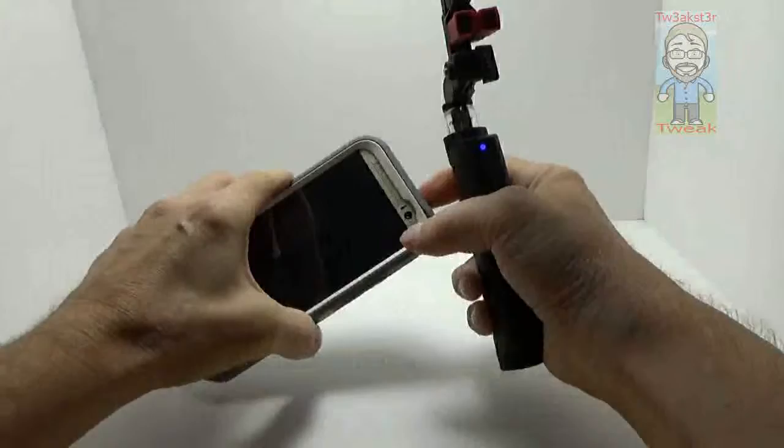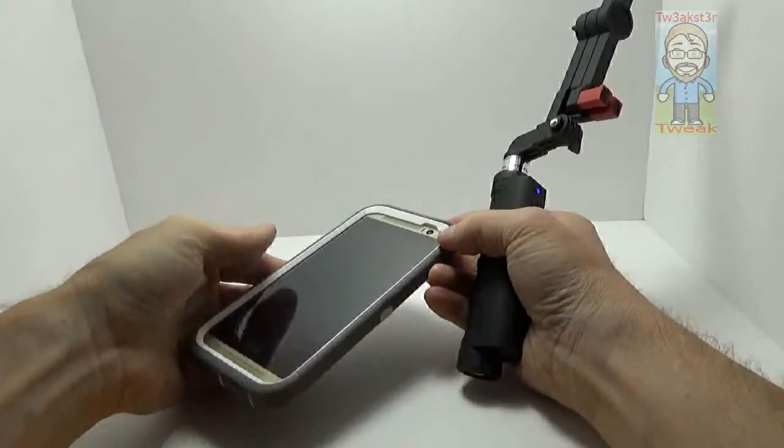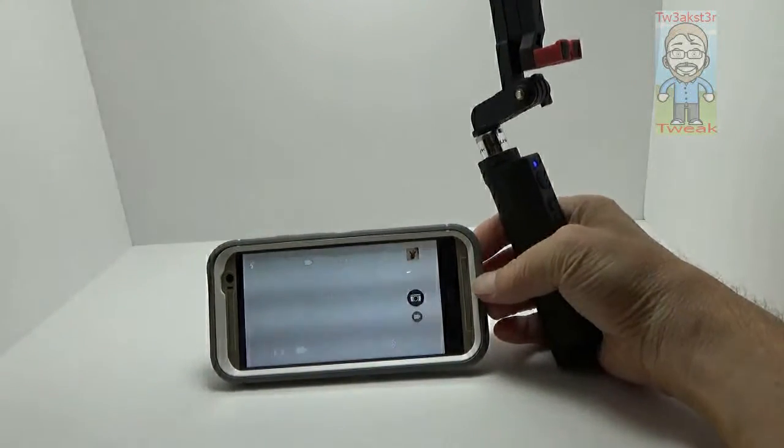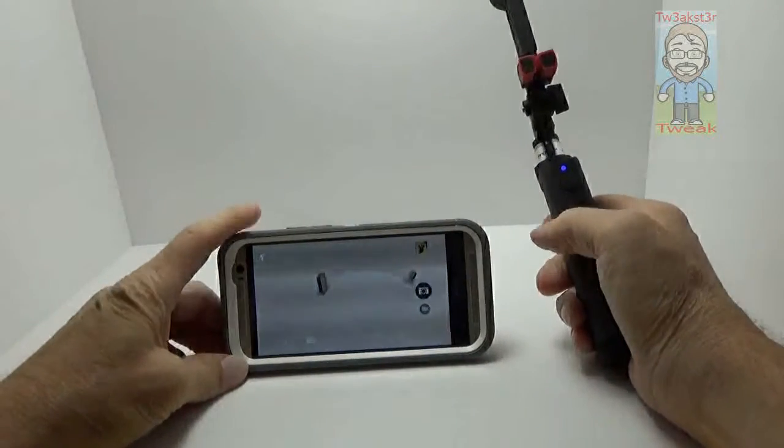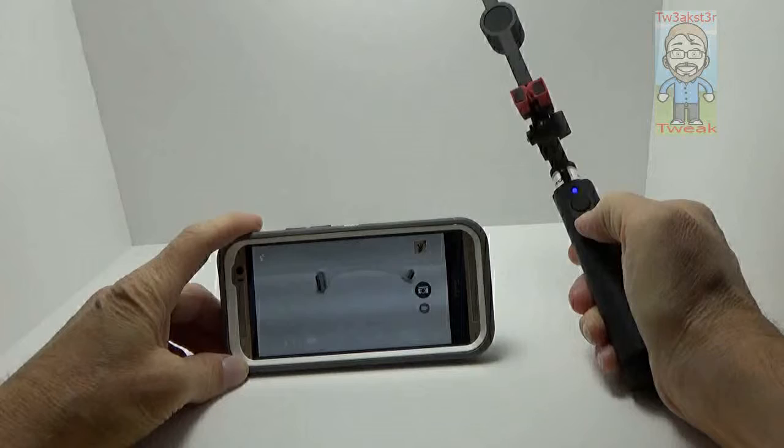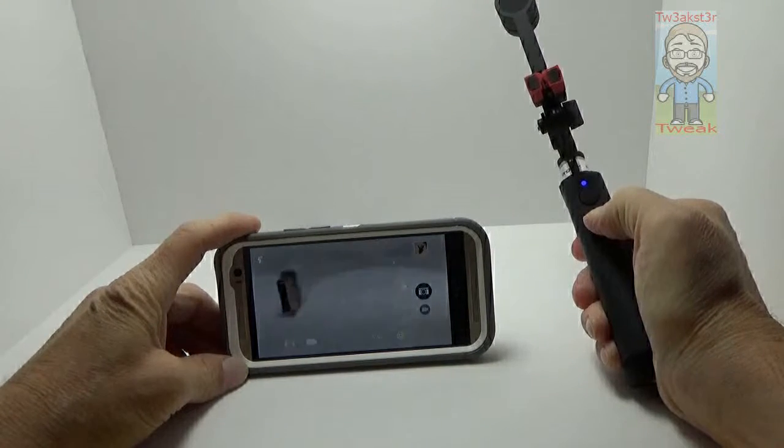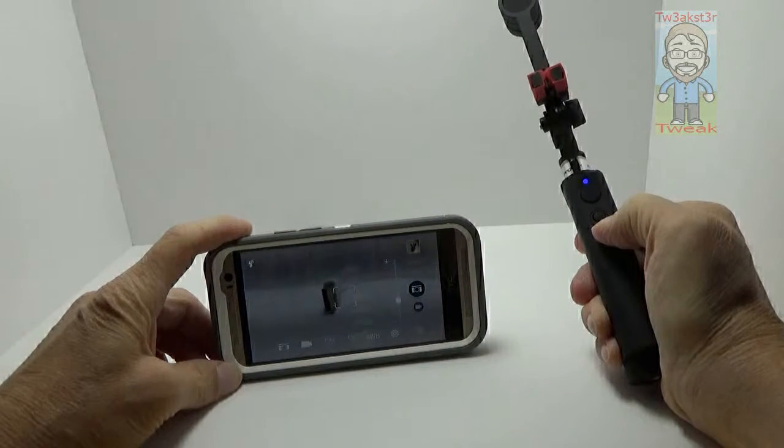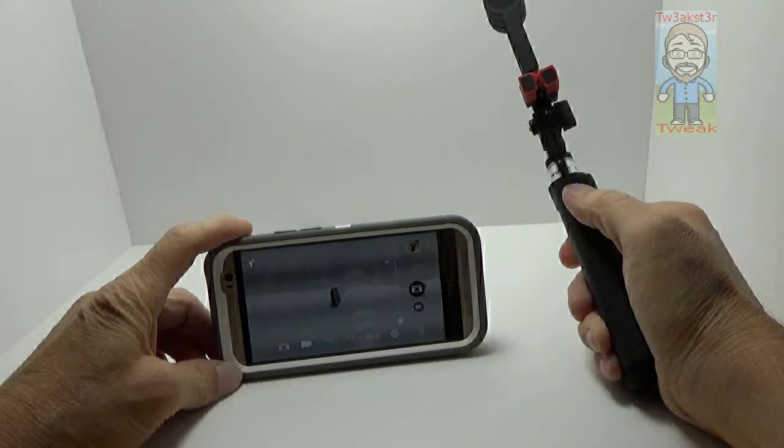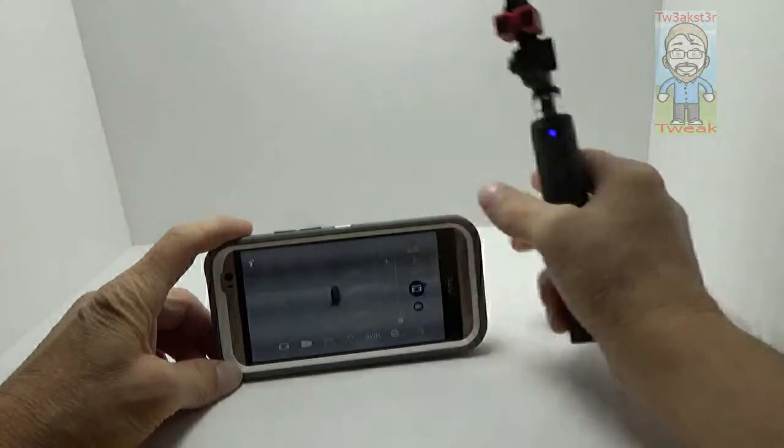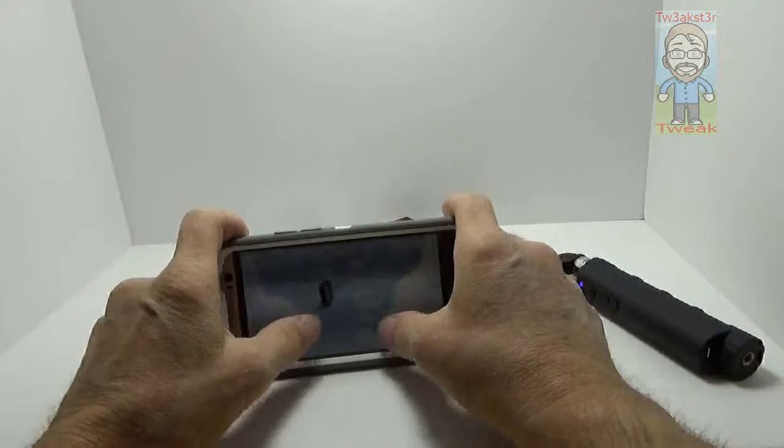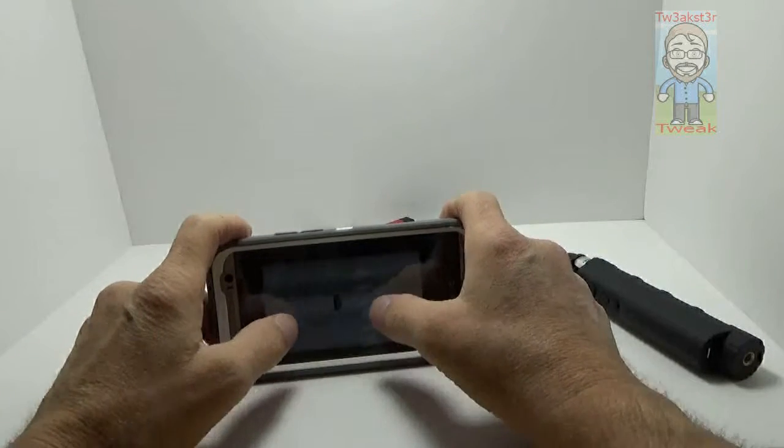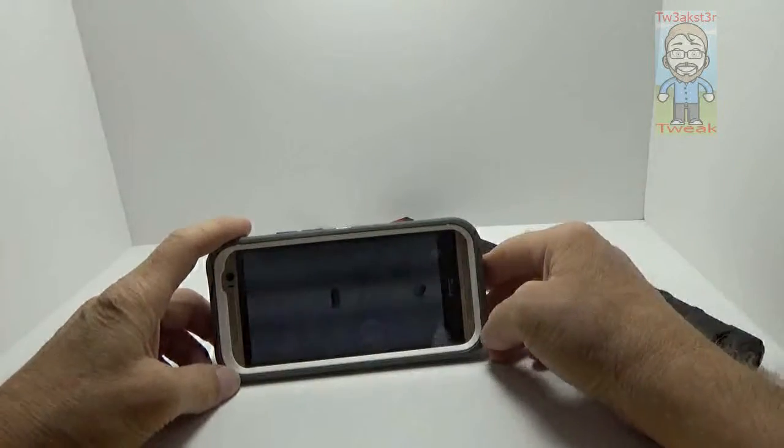Let me show you the zoom function. I have the camera app running. You can see that zoom function works really well. And of course if you push the button it takes the photo. There's the photo - that's my puppy. So it took the photo no problem.